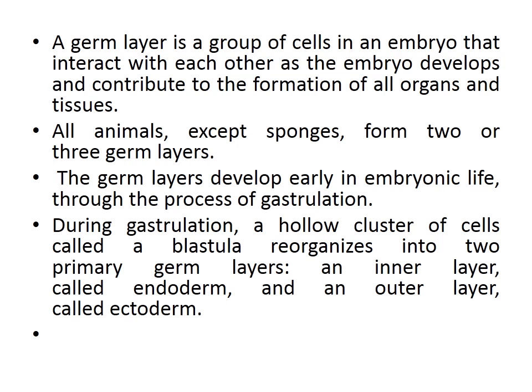The morphogenetic movements result in germ layers: the ectoderm forms the outer layer, the endoderm forms the inner layer, and the mesoderm rearranges itself on the roof of the archenteron. A germ layer is a group of cells in an embryo that interact with each other and contribute to the formation of all organs and tissues. All animals except sponges form two or three germ layers. The blastula reorganizes into two primary germ layers: an inner endoderm and an outer ectoderm.